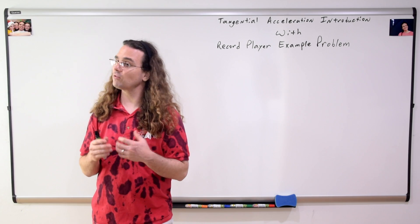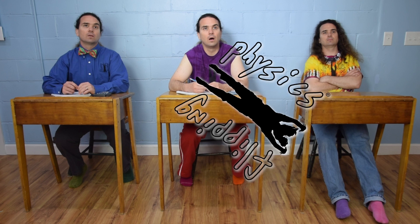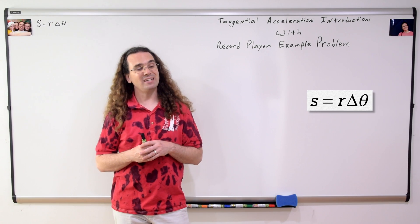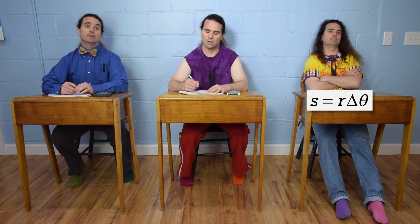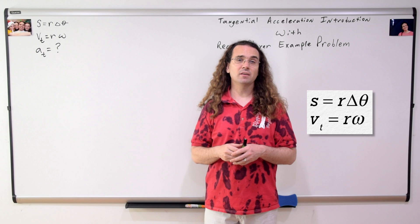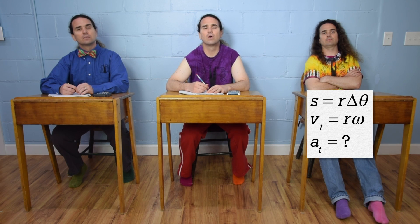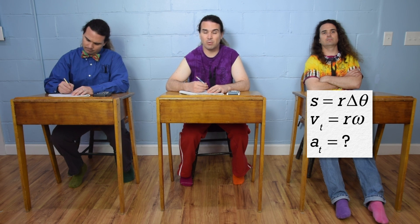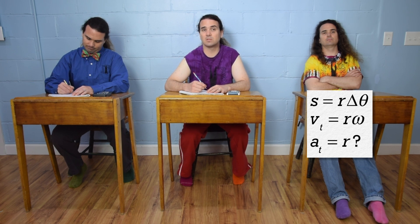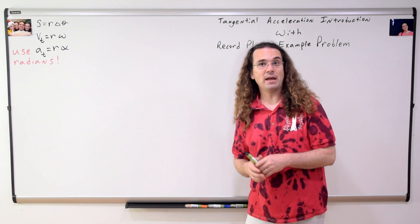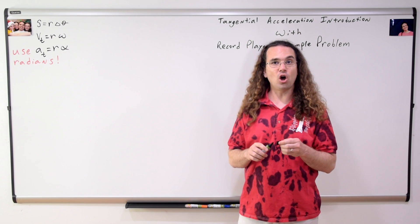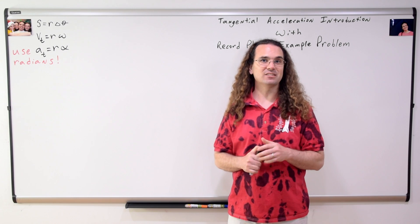Good morning. Bo, what is the equation for arc length? Arc length equals radius times angular displacement. Correct. Billy, what is the equation for tangential velocity? Tangential velocity equals radius times angular velocity. Correct. Bobby, what do you think the equation is for tangential acceleration? Well, it probably equals the radius times an angular quantity — the radius times the angular acceleration. That is correct. Tangential acceleration equals radius times alpha, or angular acceleration. And for all three of these equations, you must use radians for the angular quantities.